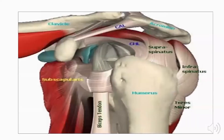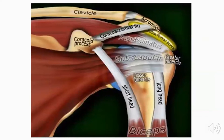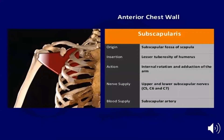These are the components of the rotator cuff as we can see in this picture. The supraspinatus is mainly superior, the infraspinatus and teres minor are posterior, and the subscapularis is mainly anterior. The supraspinatus and subscapularis are also apparent here in an anterior view of the shoulder.